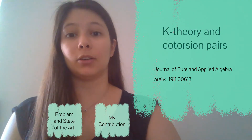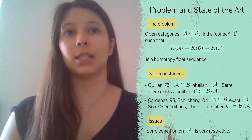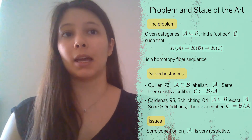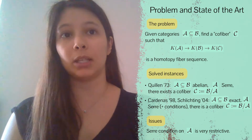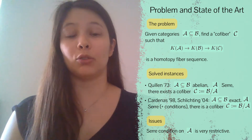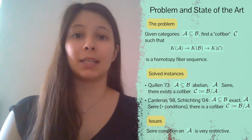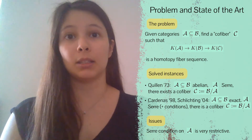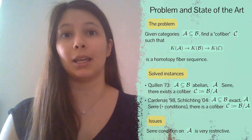My first project is on K-theory and cotorsion pairs. The problem I want to address is: say we have an inclusion of categories A inside of B and we want to construct another category C that acts as the co-fiber, in the sense that when we consider their K-theory spaces we get a homotopy fiber sequence. A fiber sequence of K-theory spaces gives us a long exact sequence of K-theory groups, so we get information about how the K-theory groups of A and B are related.